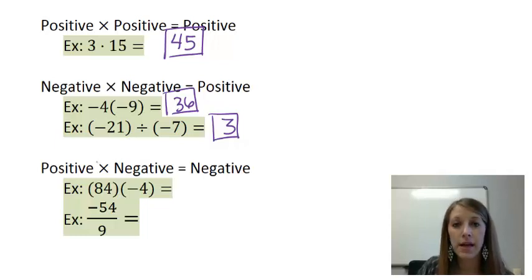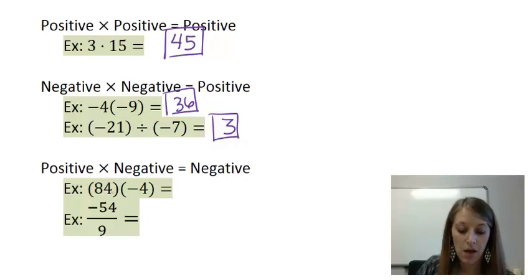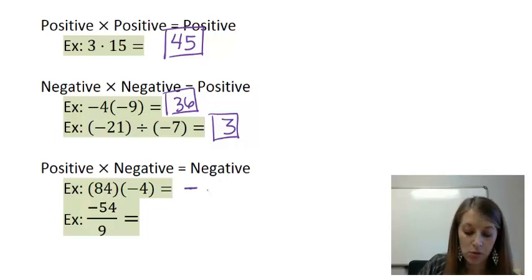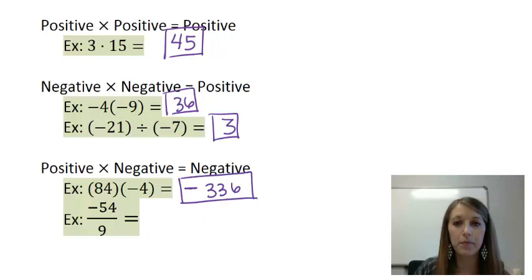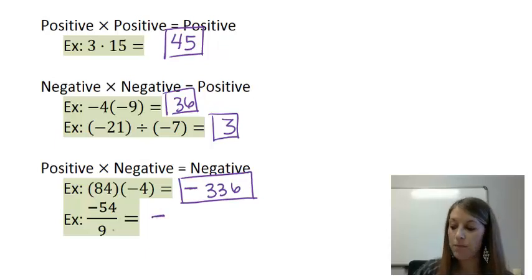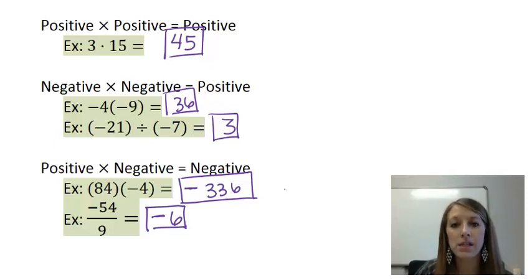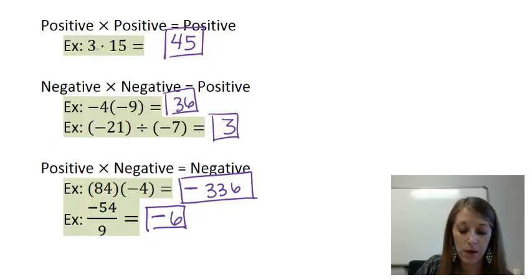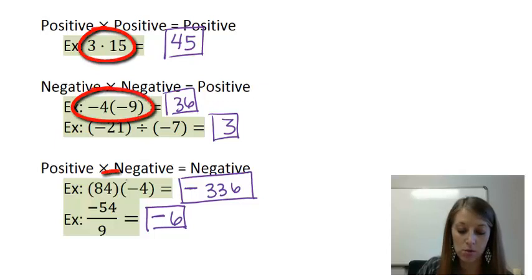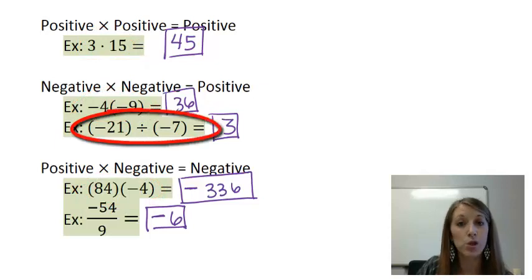If you're multiplying or dividing and the signs are opposite — one positive and one negative, in any order — your answer is always going to be negative. So positive 84 times negative 4 is guaranteed to give a negative. 84 times 4 gives 336, so the answer is negative 336. Negative 54 divided by positive 9: negative divided by positive gives negative. 54 divided by 9 gives 6, so the answer is negative 6. You can also see the different ways to write multiplication — as a dot, or with one or two sets of parentheses — and division as a division bar or a fraction bar.